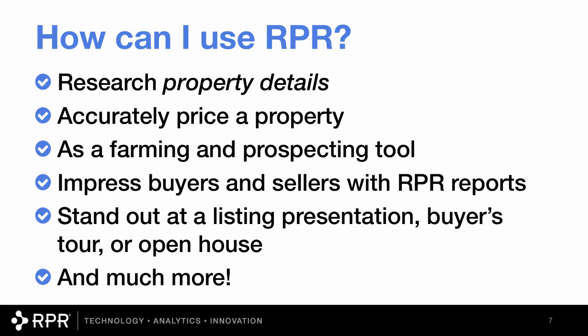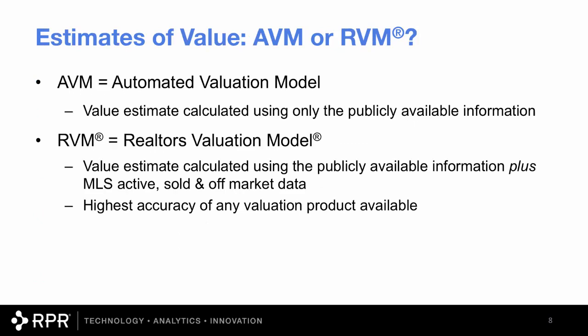RPR is a great way to stand out at a listing presentation, buyers tour, or open house by having our customized reports with you. You can use it to determine the best price for a property using the comp analysis and home improvement tools. It's also a great way to farm new areas or prospect for bank-owned properties. There are two terms you'll see: AVM — automated valuation model, an estimate calculated using only publicly available information — and RVM, the Realtor's Valuation Model, which combines public information with MLS active, sold, and off-market data, giving it higher accuracy than any other valuation product on the market.